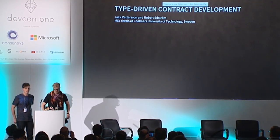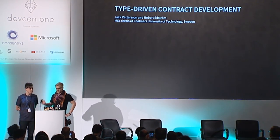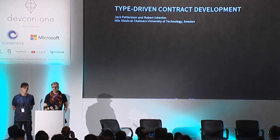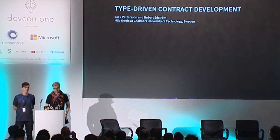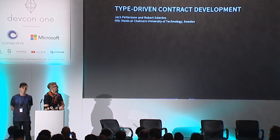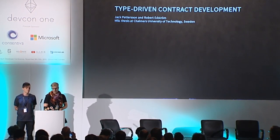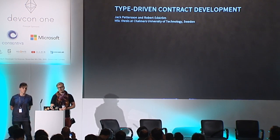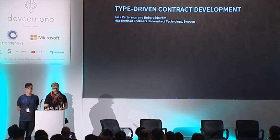Hello everyone, my name is Robert, this is Jack and we're currently working on our master's thesis in computer science. We're working on a new programming language for the IBM, and we're here to talk about how smart contracts can be a perfect fit for a dependently typed functional language.